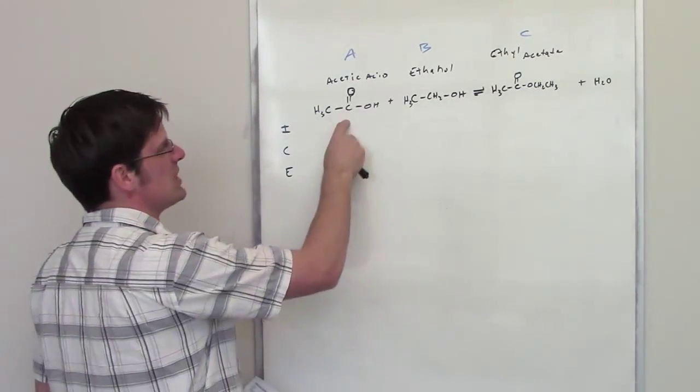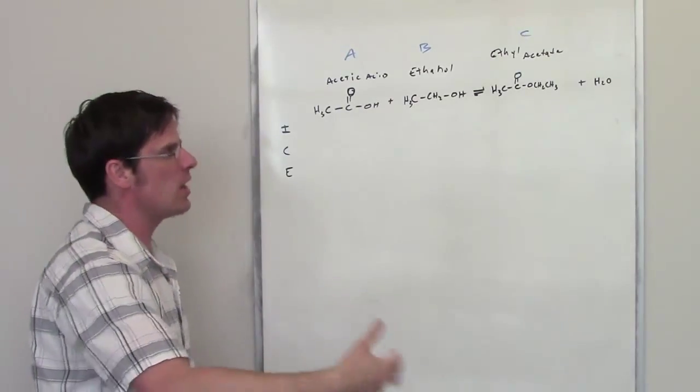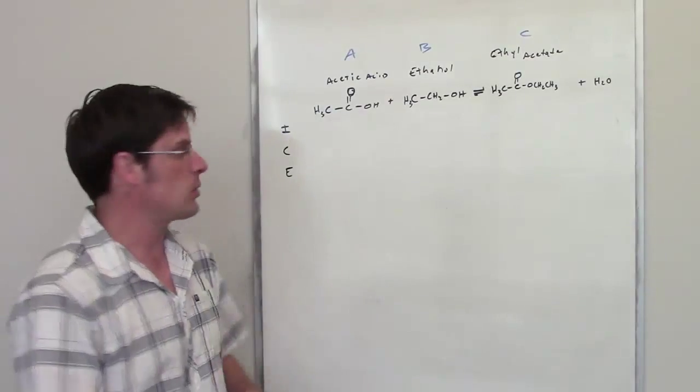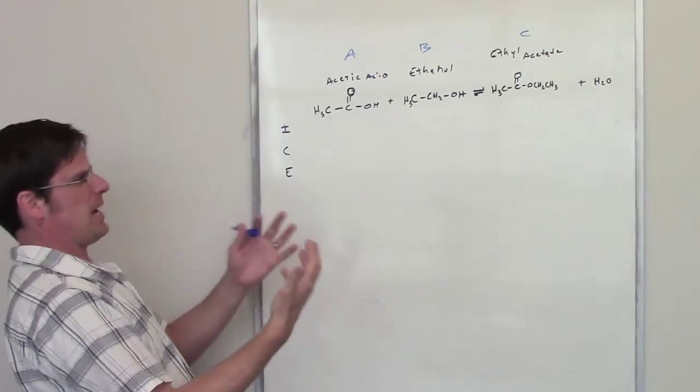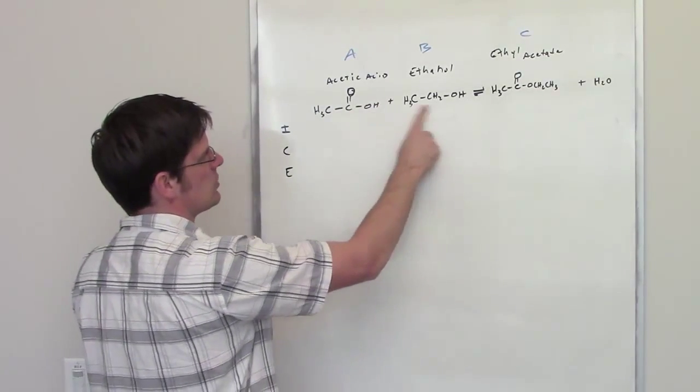The question says we have an equilibrium setting where we have acetic acid and ethanol that are thrown into a bucket and they're allowed to stir until they reach equilibrium. Now, the equilibrium product for this reaction is ethyl acetate. Just to sort of explain what's going on here, this is the structure of acetic acid, and this is the structure of ethanol.